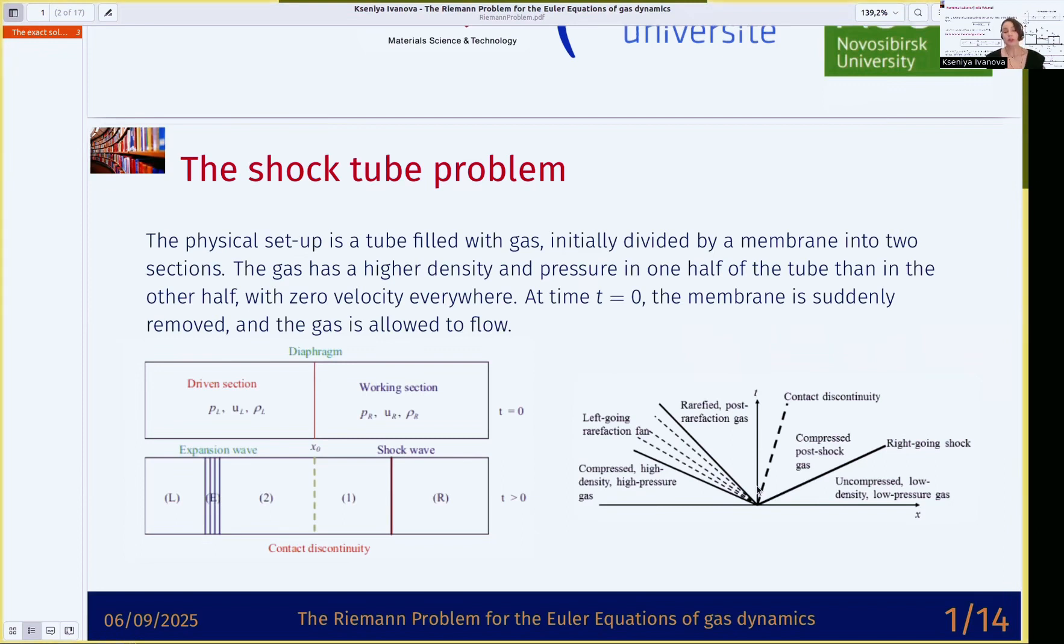Now imagine that instead of these gas sections, you have your grid cells with piecewise constant average values of your state variables. And to find flux in the middle between grid cells, you solve Riemann problems.